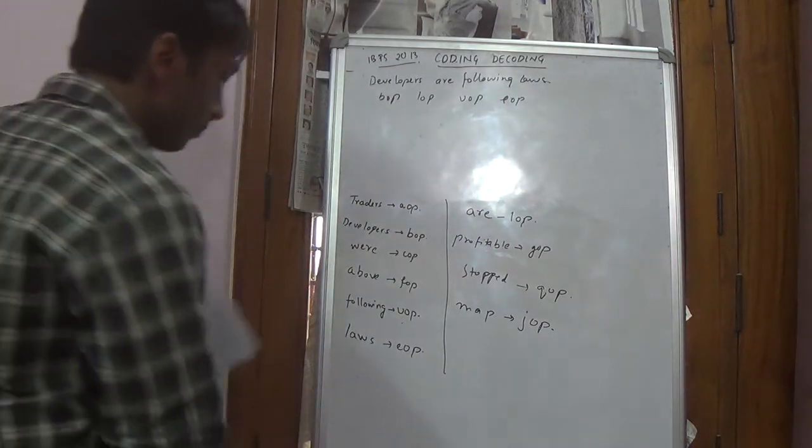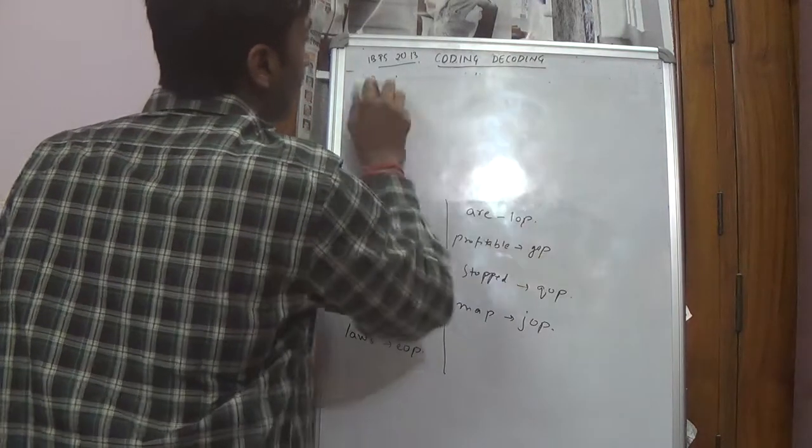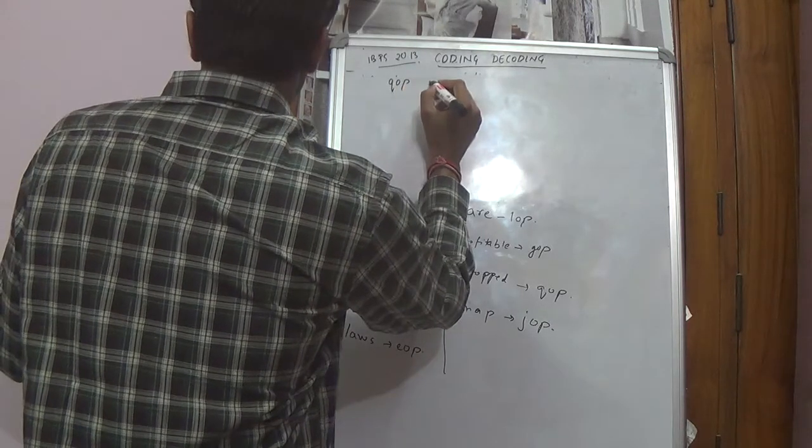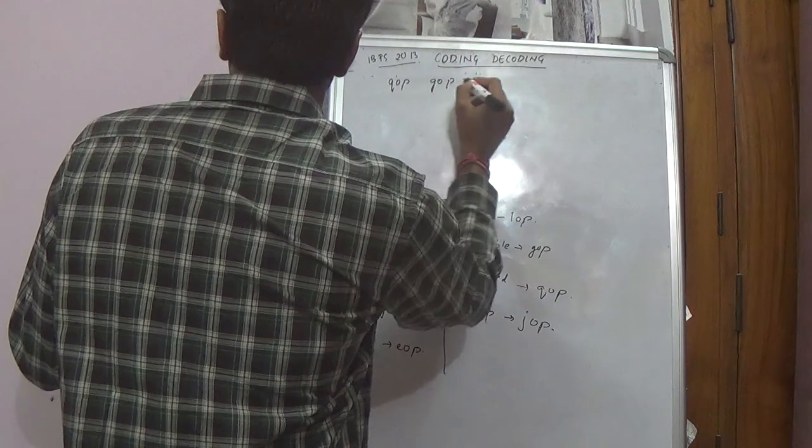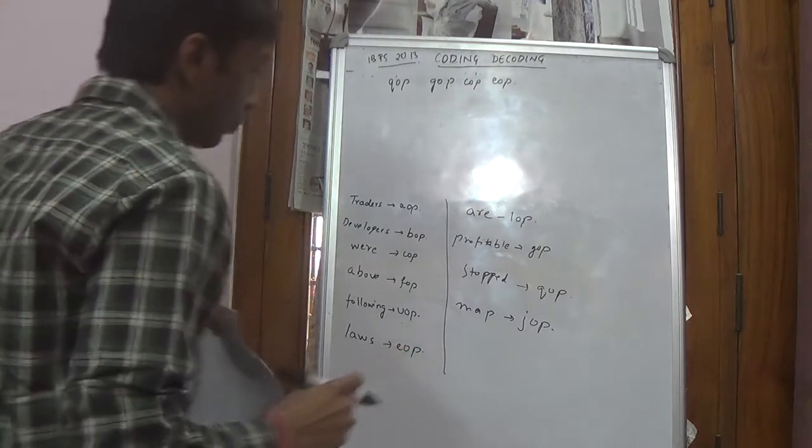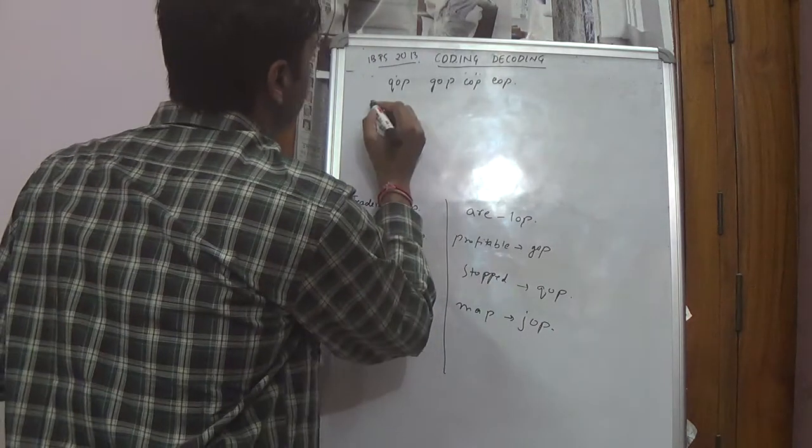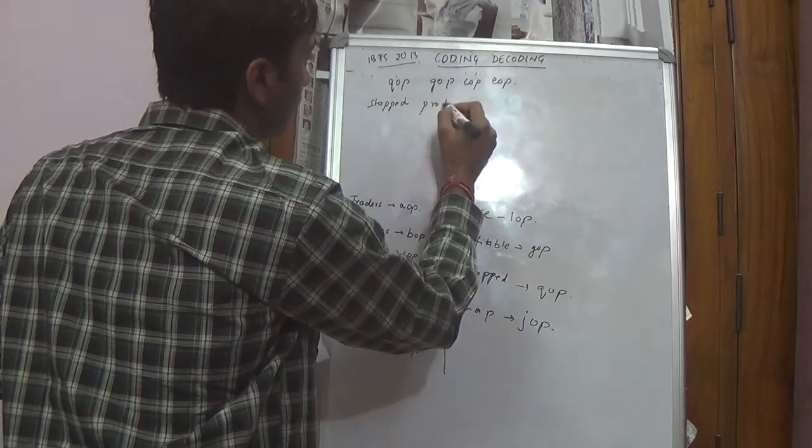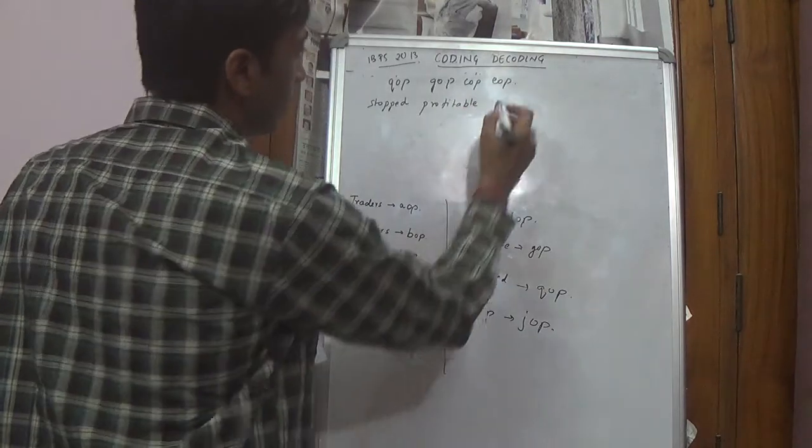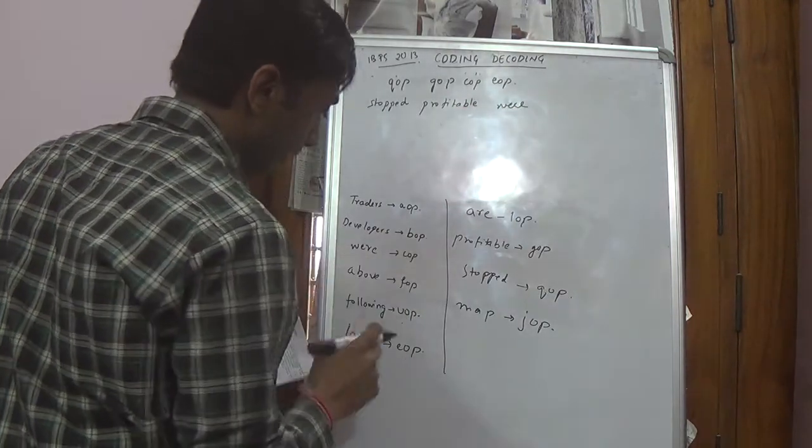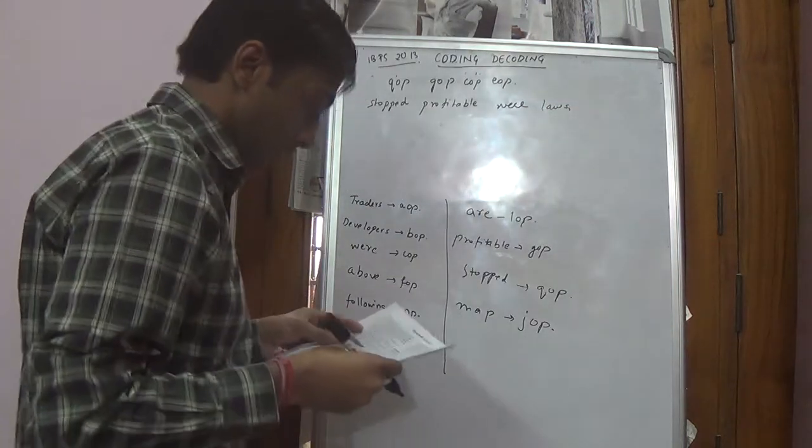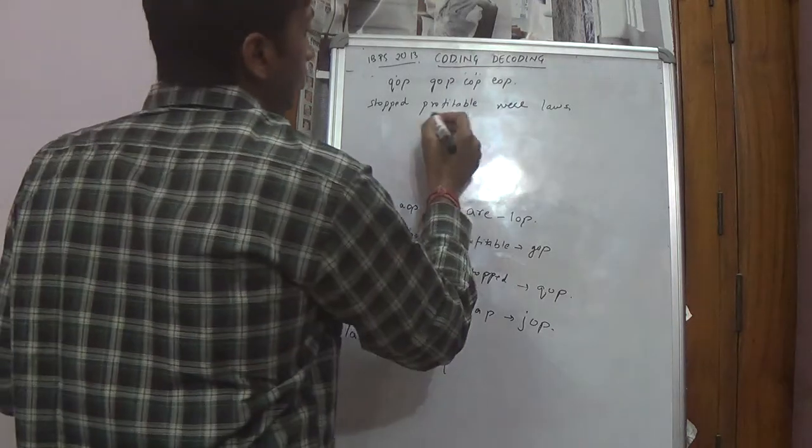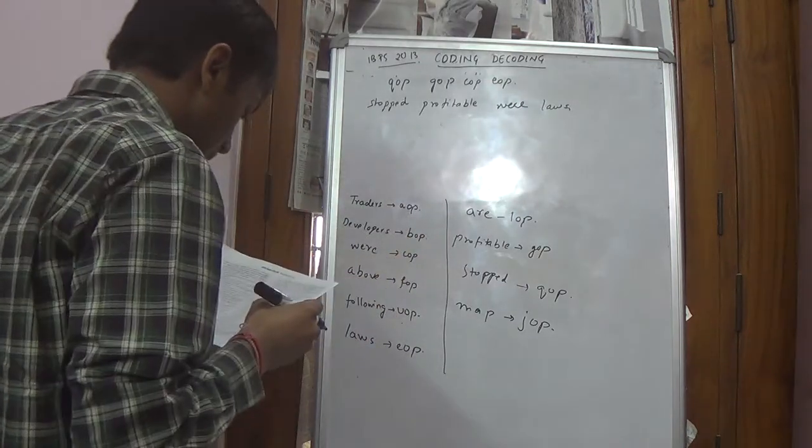Similarly, it says QOP, GOP, COP and EOP. QOP is stopped. GOP is profitable. COP is were. And EOP is laws. Stopped profitable were laws. Profitable laws were stopped. This is option 1.